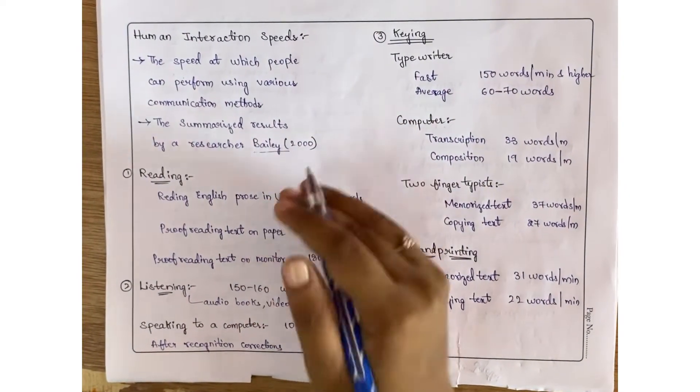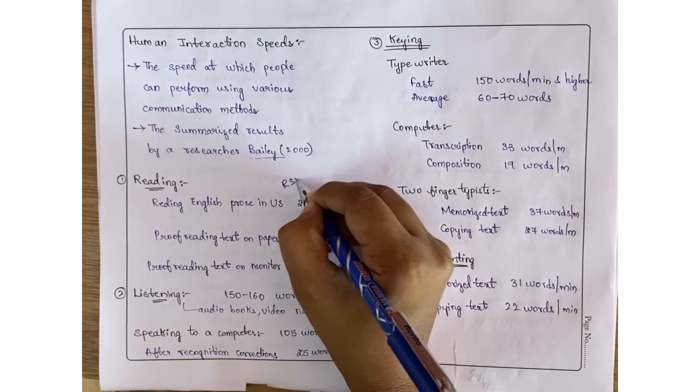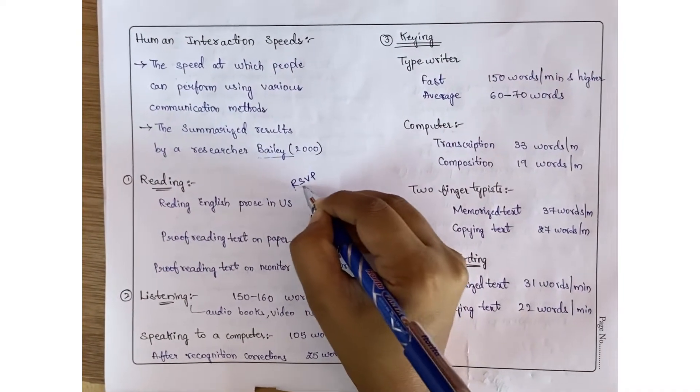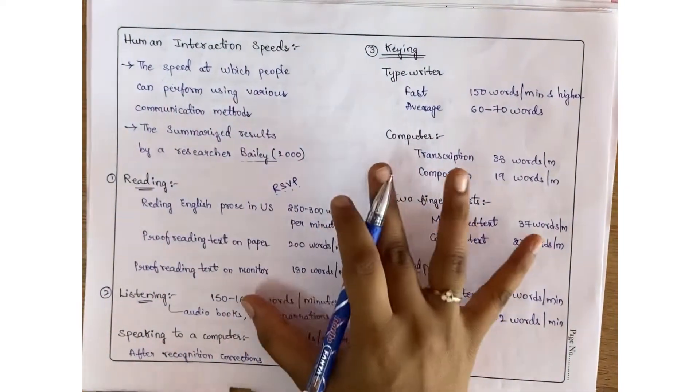They also implemented another method known as RSVP, which stands for Rapid Serial Visual Presentation. In this method, text is displayed on a screen and words are rapidly changed - 600 to 1600 words per minute are replaced.